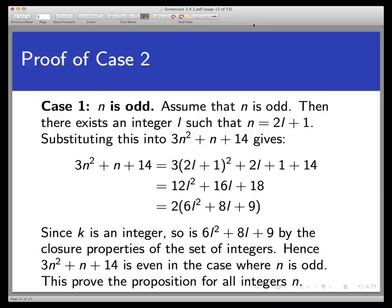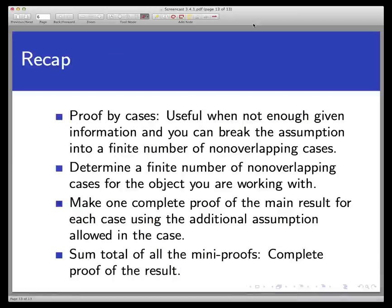So to recap the strategy of a proof by cases: proof by cases is often helpful when the assumptions of your proof don't give enough structure to work with. In this situation, think about a finite number of non-overlapping cases into which the objects you're working with could fall such that all possibilities are covered.